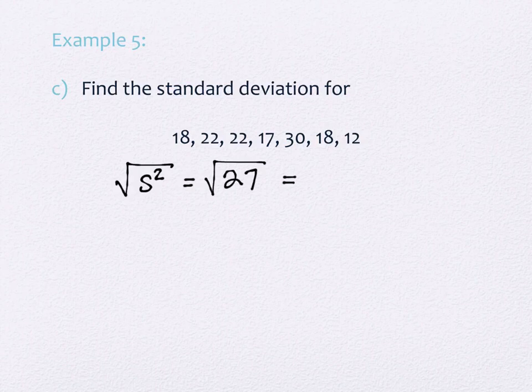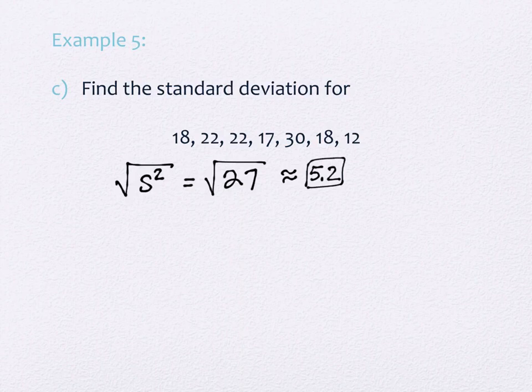Standard deviation is the square root of the variance. The square root of 27, to one decimal, is 5.2. That 5.2 operates similarly to the mean absolute deviation of 4.1 - both tell you how far spread apart the data is from the mean.